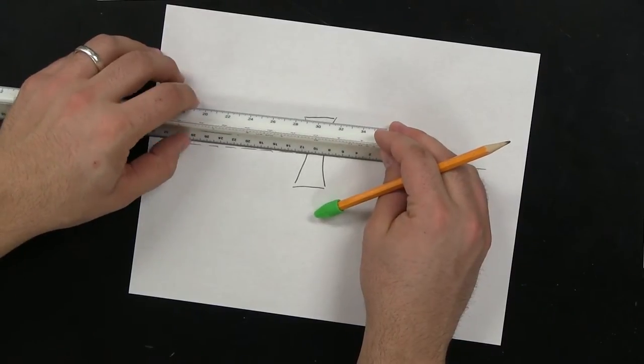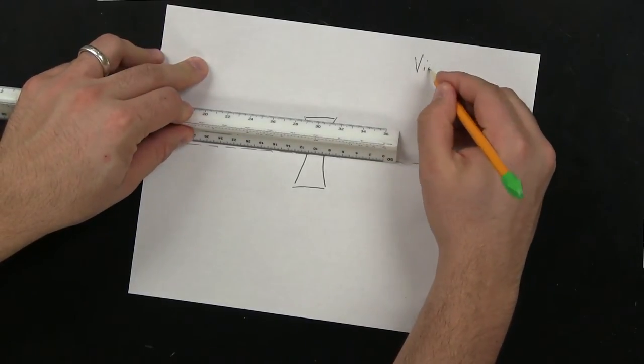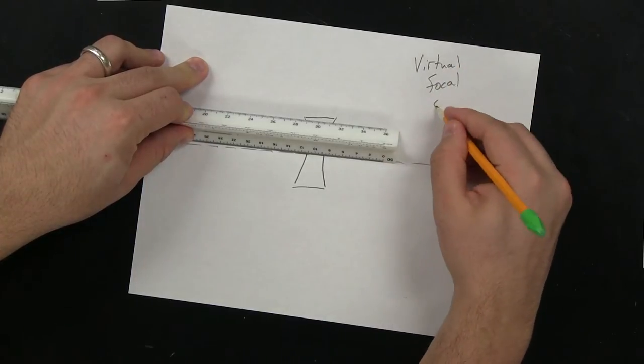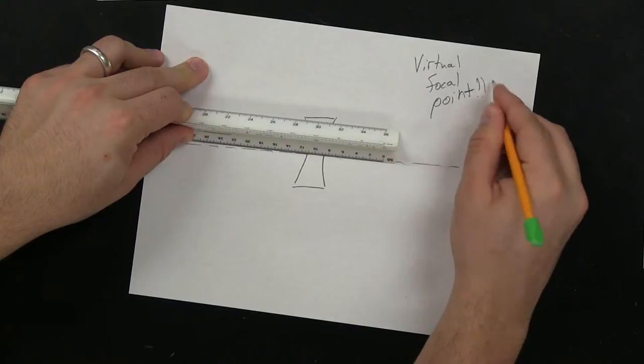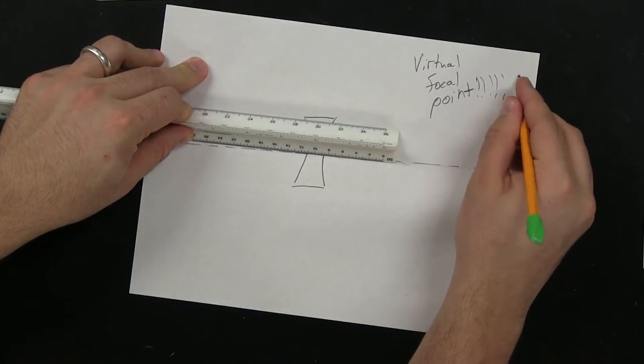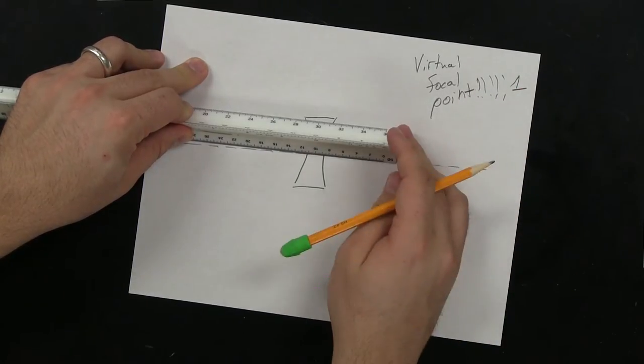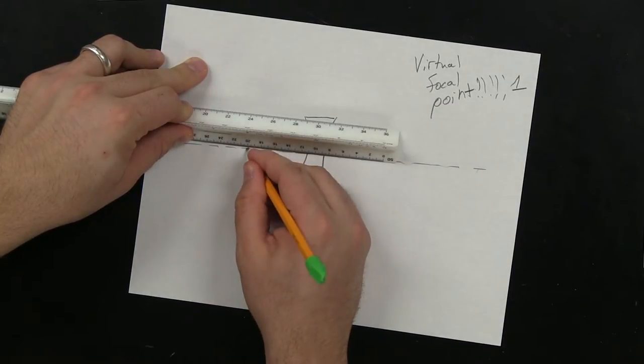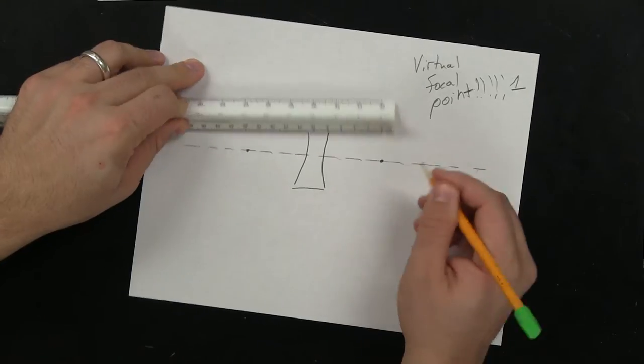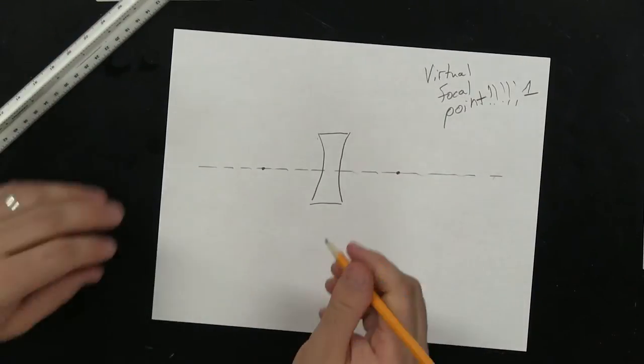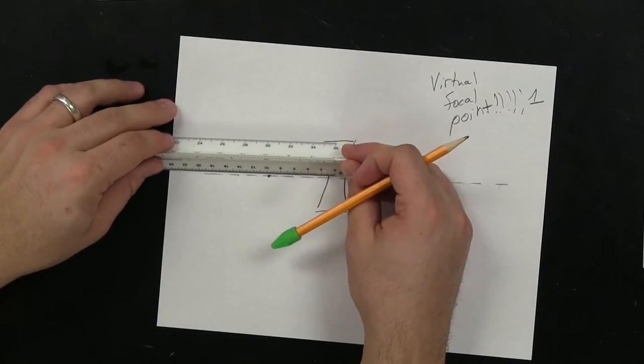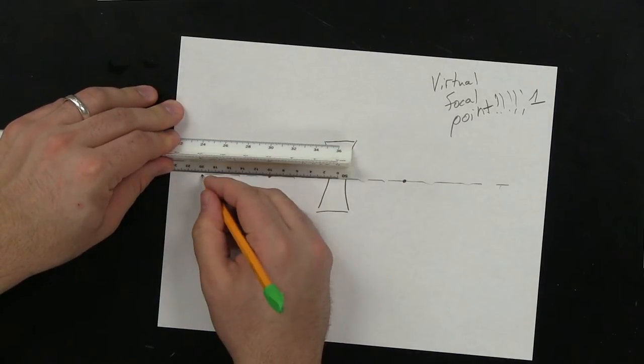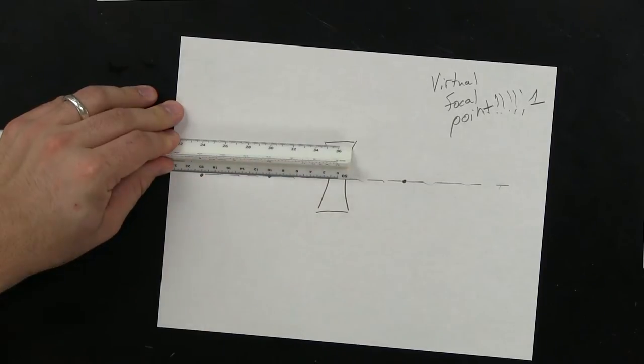We're going to make it a virtual focal point. A virtual focal point one. And that is going to be at negative 10 on both sides. Now you're saying to yourself virtual focal point what's the big deal? Why does it matter? Virtual focal point means that when we draw our lines it's going to be ever so slightly different than when we drew our lines on the last ones.